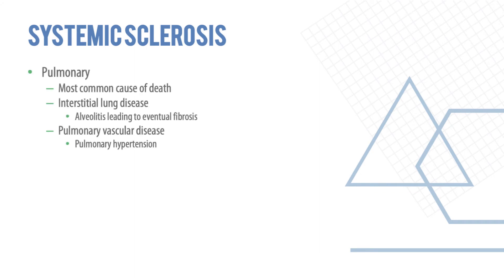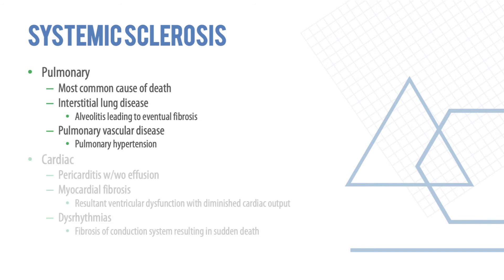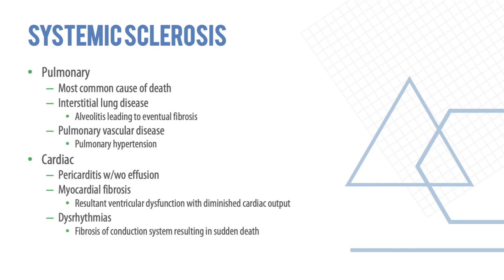Systemic sclerosis can also involve the lungs, which is the most common cause of death in these patients. It can cause alveolitis leading to fibrosis and pulmonary hypertension. Cardiac involvement includes pericarditis with or without effusion, myocardial fibrosis causing ventricular dysfunction with decreased cardiac output, dysrhythmias, and fibrosis of the conducting system resulting in sudden death.